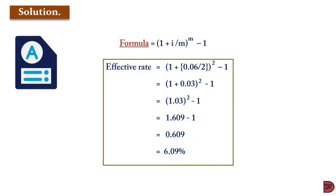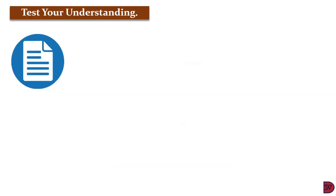That gives us 6.09%. So 6% compounded twice using the nominal rate will give you 6.09%. The interest that 6% compounding twice will give you is equal to multiplying 6.09% directly on the principal.